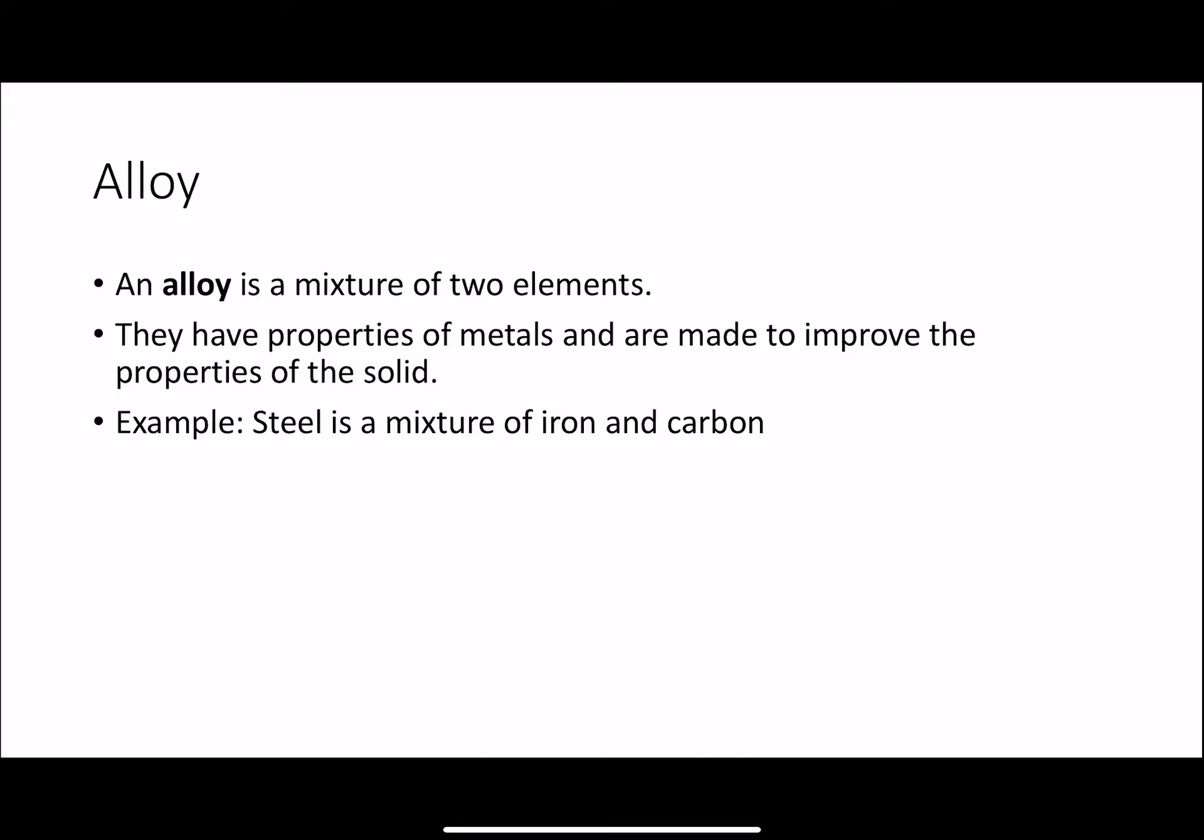Another thing we want to know is what an alloy is. An alloy is a mixture of two elements together in a solid state. They have properties of metals and they're made to improve the properties of a solid. For example, steel is a mixture of iron and carbon. Scientists wanted to have some of the properties of iron and some of the properties of carbon. Iron is very strong, carbon is very lightweight, and so they create an alloy where they mix those two elements together, and that's how we create steel.